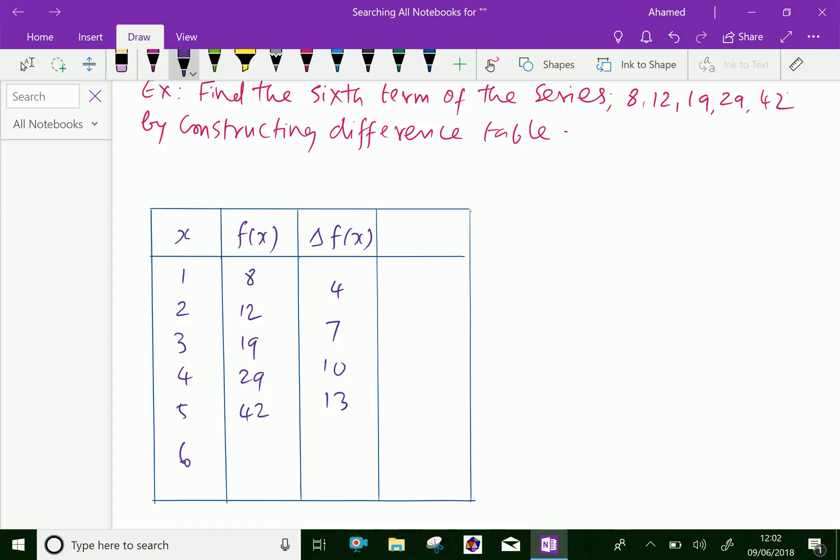Now, the next one is delta square, second difference, delta square f(x). 7 minus 4 is 3, 10 minus 7 is 3, and 13 minus 10 is also 3. Now we constructed the difference table.